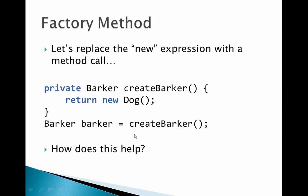That reduces our surface area, so if we ever want to create something different, we just have to go to one place and change it — a pretty big benefit. Every place we use it, we just say `barker = createBarker()`. Logically there's no coupling in that line at that spot. We've reduced our coupling to one spot. The fewer places you have coupling, the less fragile you are, and the easier you are to adapt.